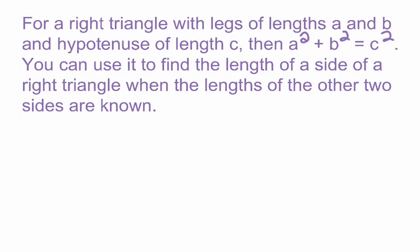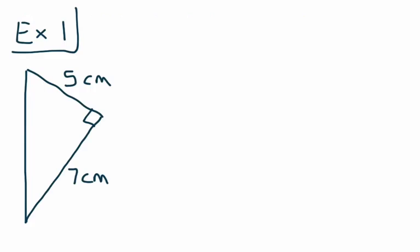Let's take a look at some examples of how we can actually use the Pythagorean Theorem to find the length of a missing side of a right triangle. For this first example, we're given a right triangle — we know it's a right triangle because of the square in the corner. We know two measurements: one side is 5 centimeters and the other is 7 centimeters. We want to use these two measurements to find the length of the missing side. We need to determine whether we're looking for a leg or the hypotenuse. These two sides form the right angle, so they are the legs, and the missing side opposite the right angle must be the hypotenuse. We'll label that missing side C.